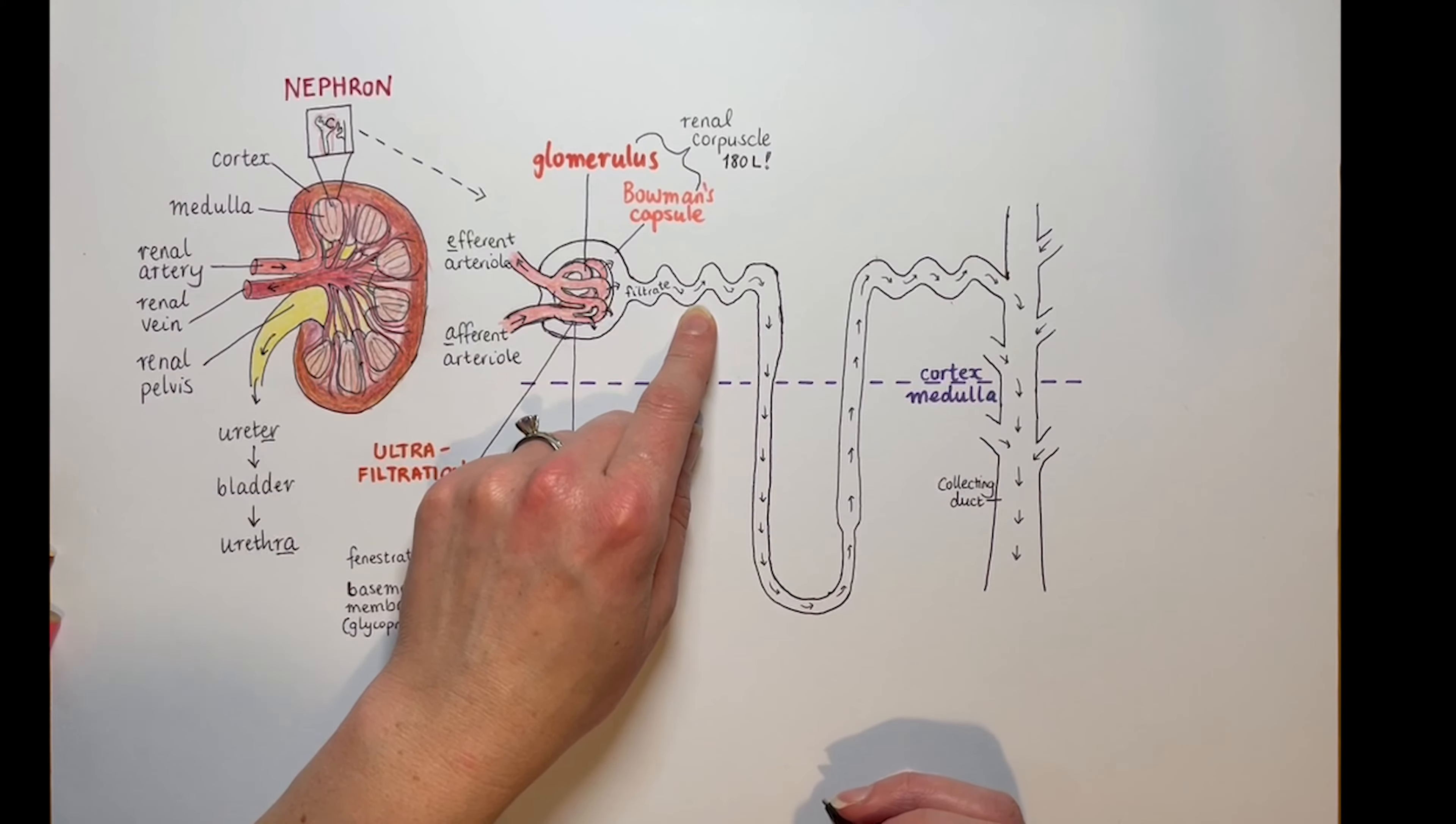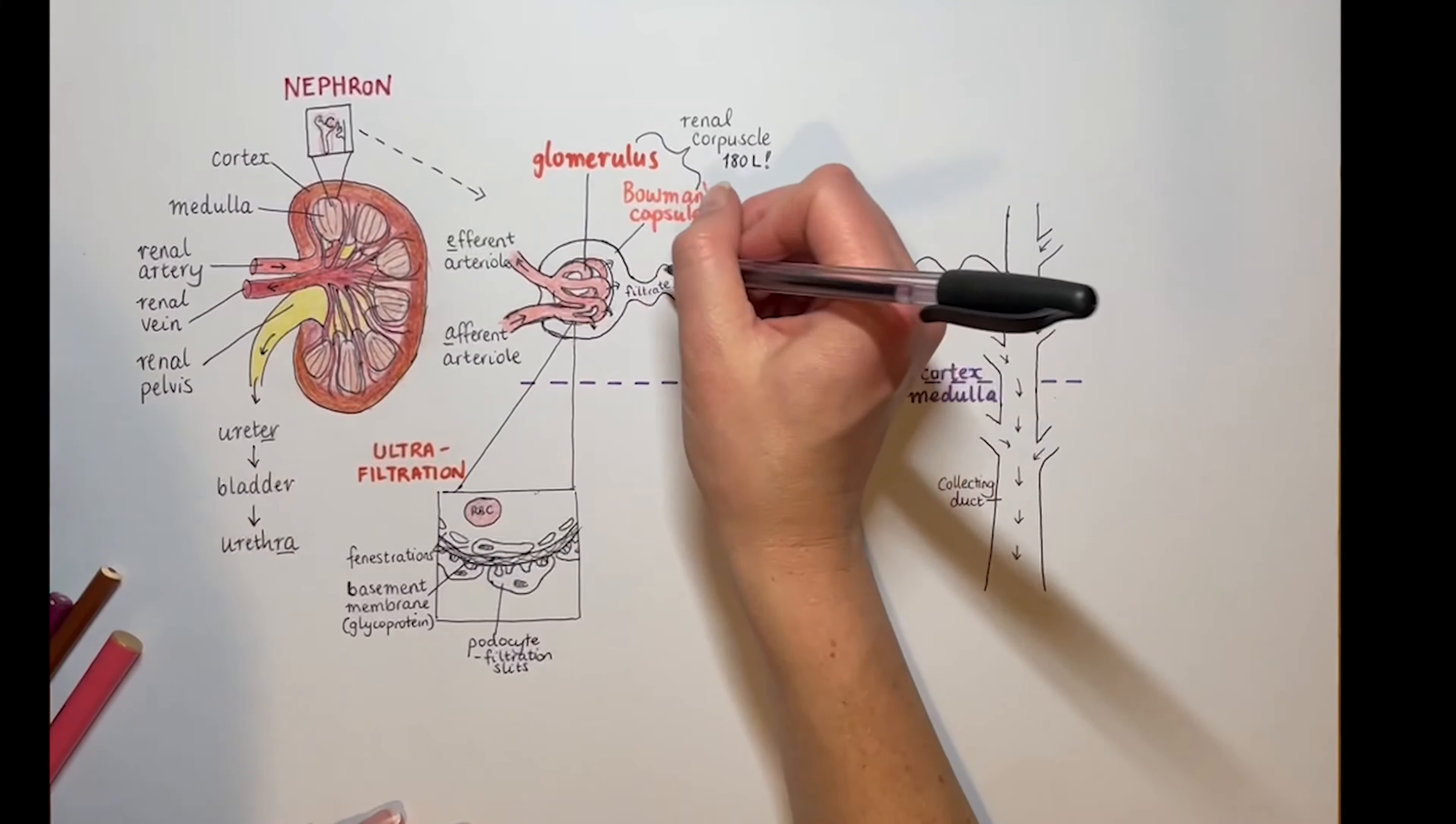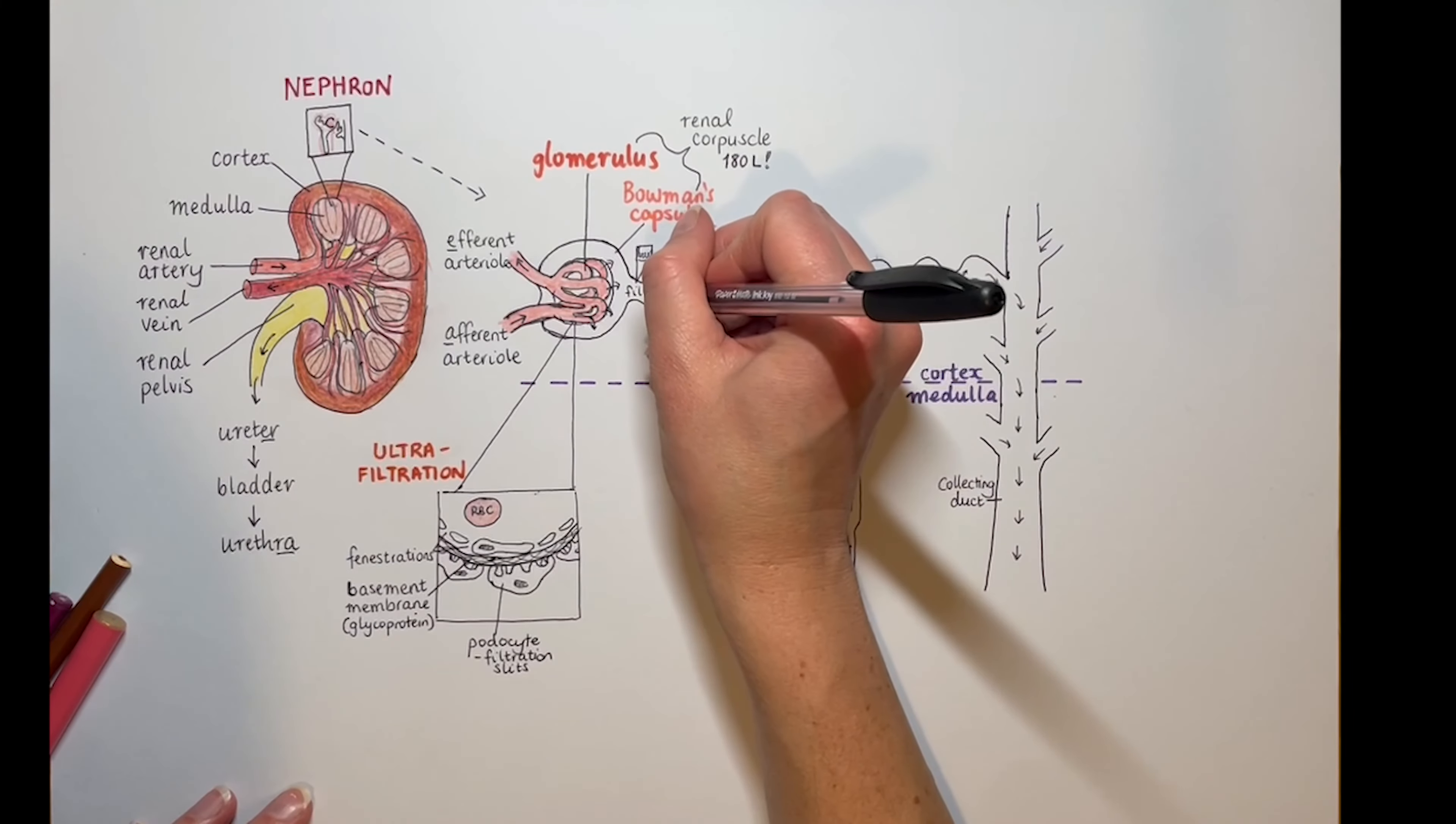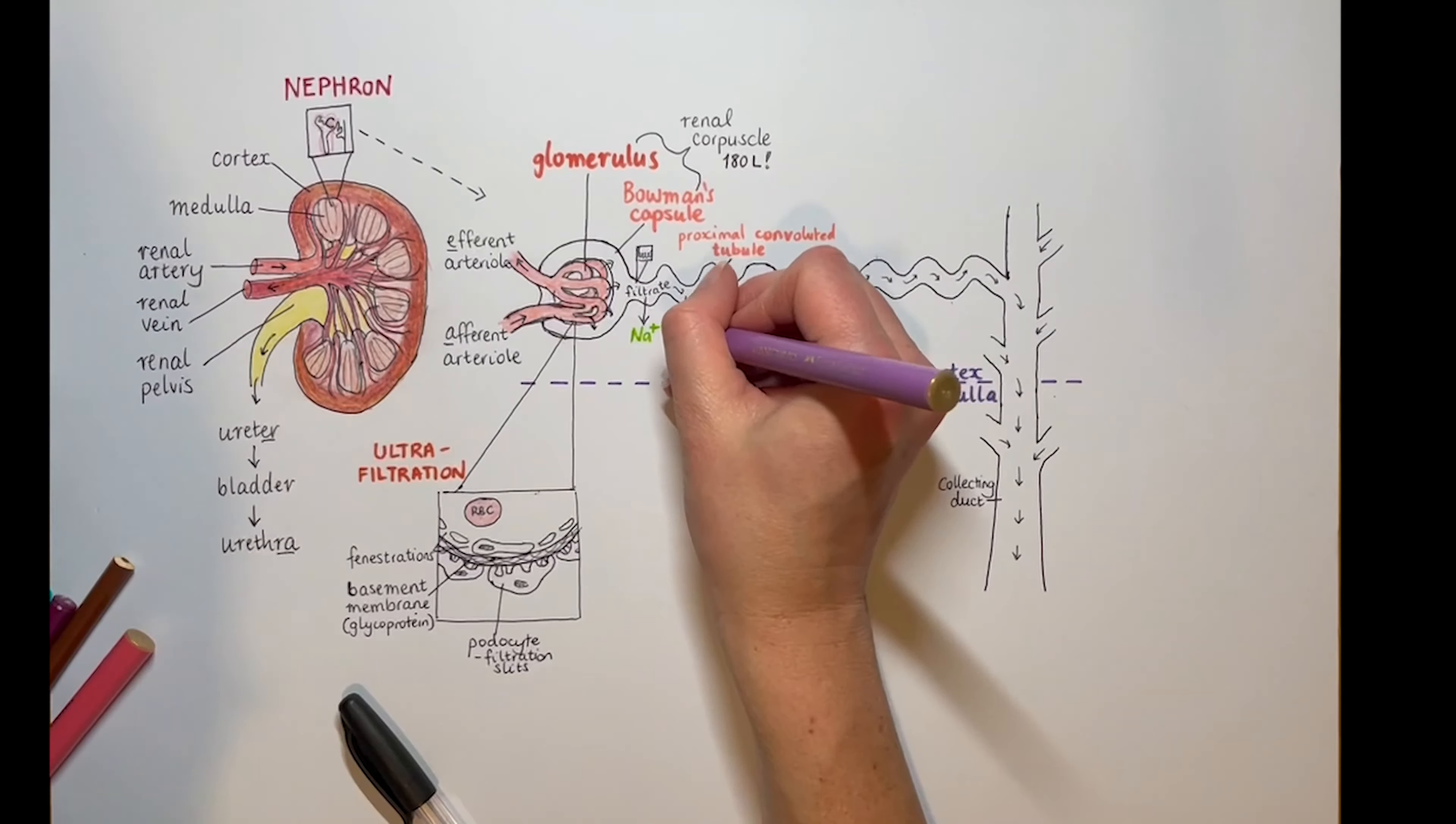After the Bowman's capsule, we have the proximal convoluted tubule. Proximal means it's close, like the word proximity. It has a brush border to increase surface area for uptake of selected solutes, much like a small intestine. Its cells have microvilli. Crucially, some of the salt—and I'm saying salts here, I'm talking about sodium and chloride particularly, and I'm just indicating sodium on the diagram—but crucially, some of the salt and all of the glucose and amino acids in the filtrate are actively reabsorbed into the bloodstream.